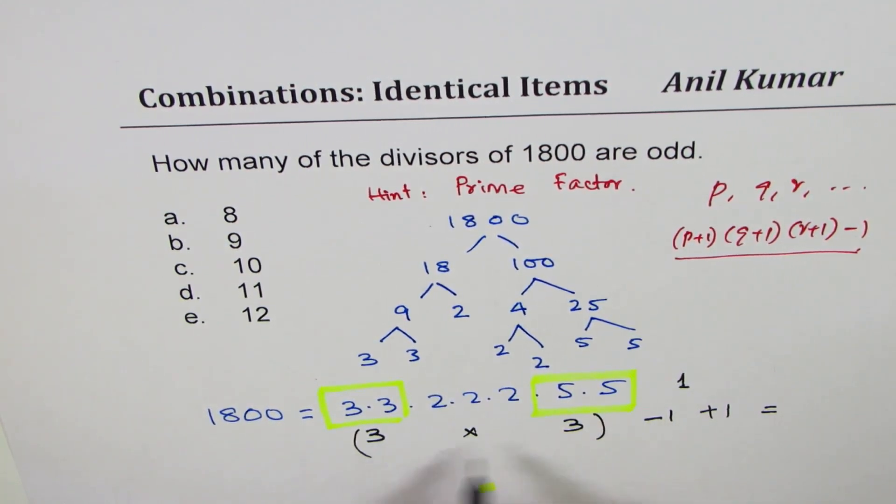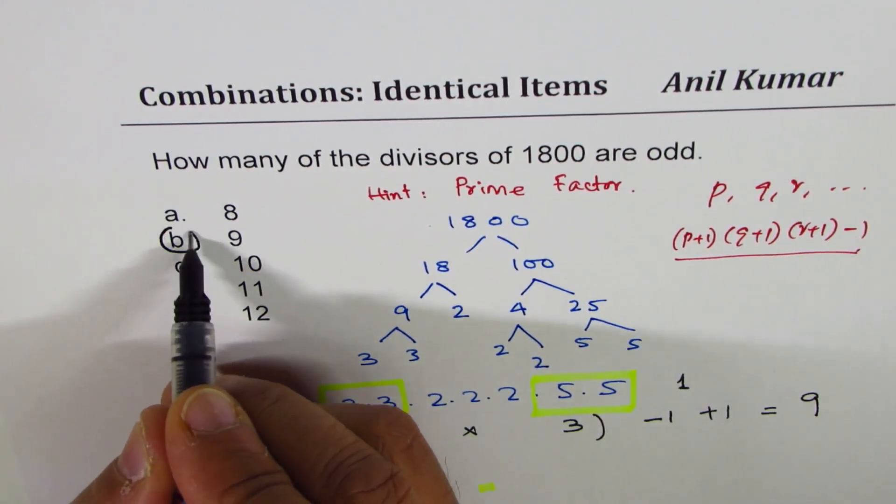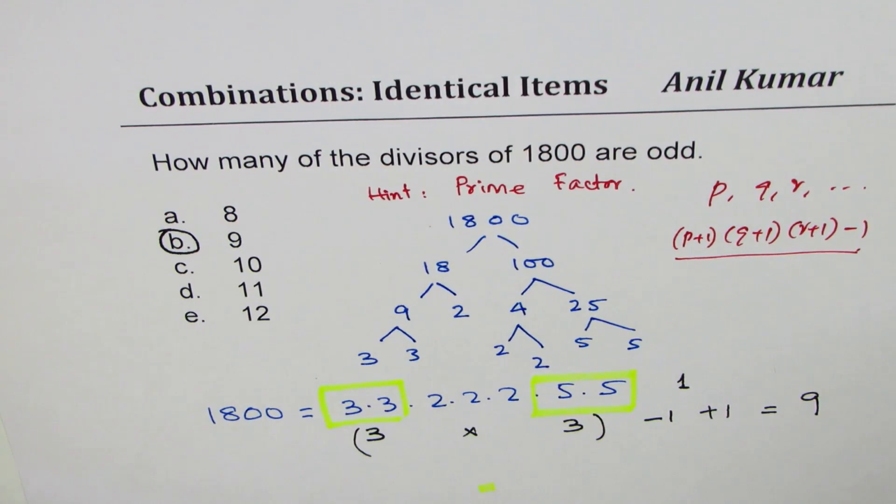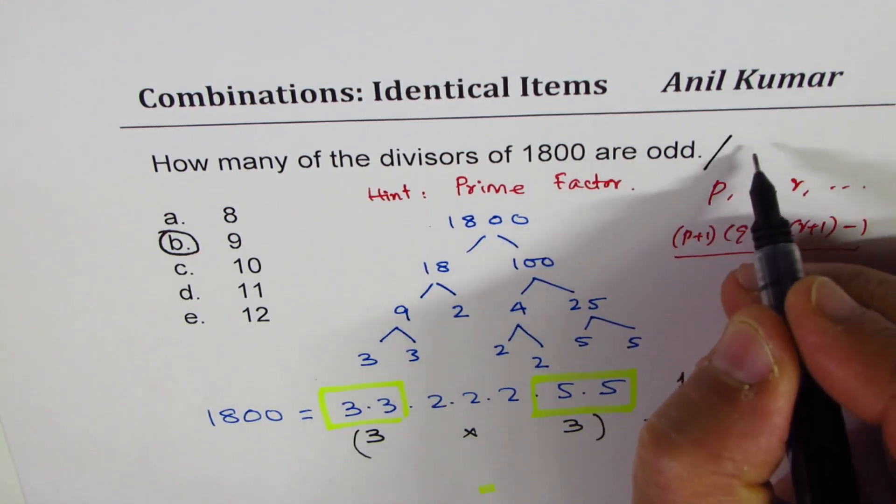That will give us the answer. 3 times 3 is 9, and therefore the right choice is 9. So I hope you understand how to solve such questions. Right, now let me give you a choice for even.